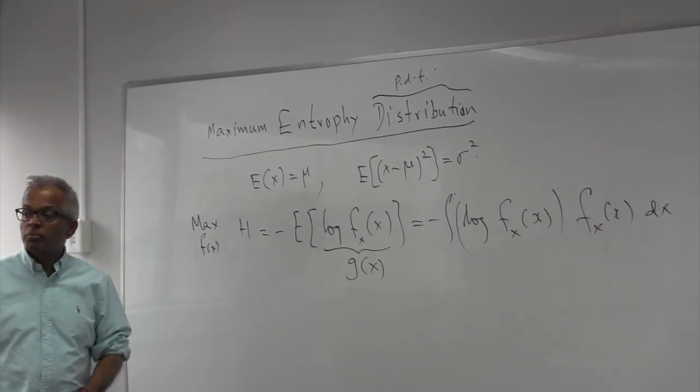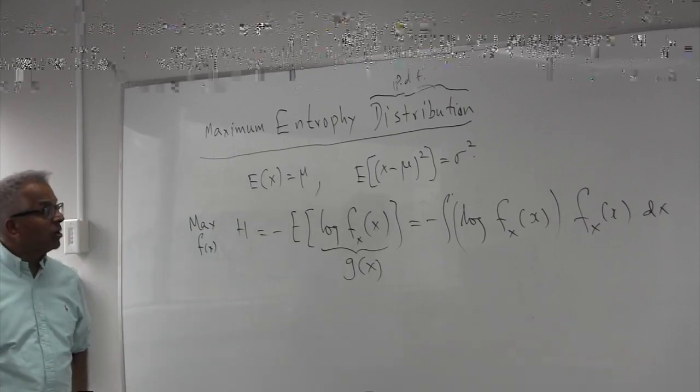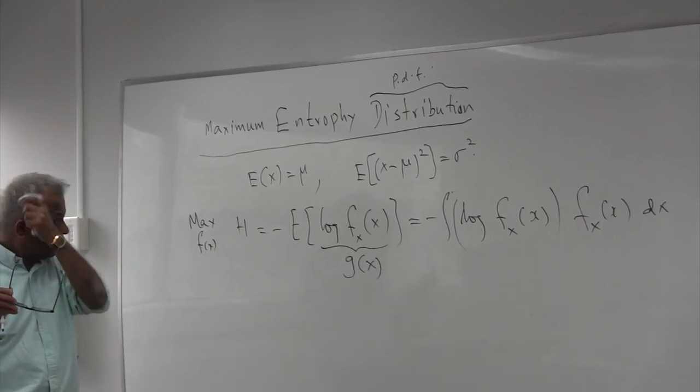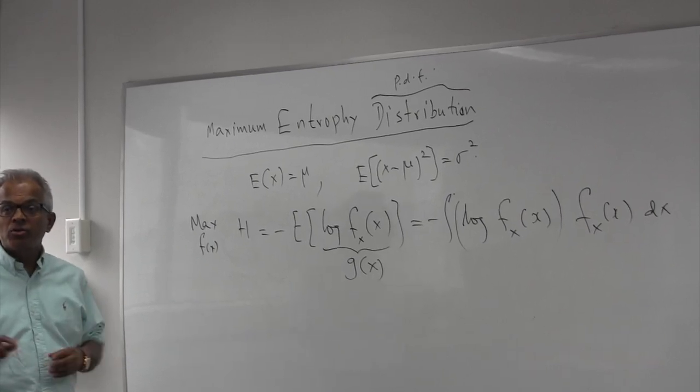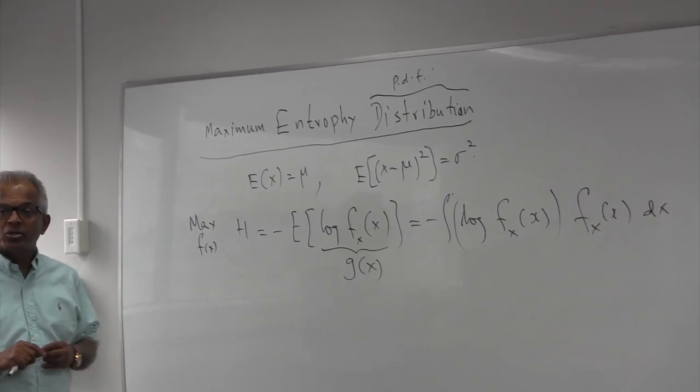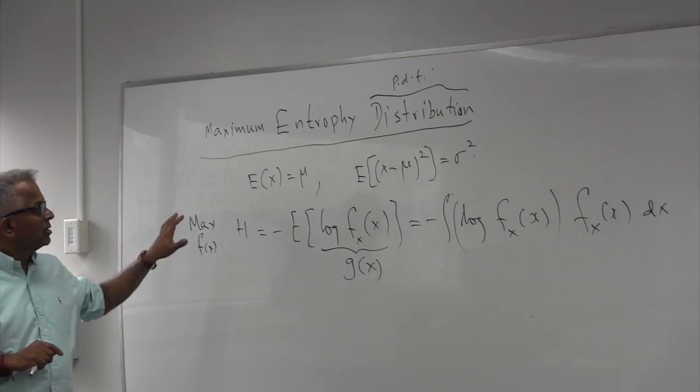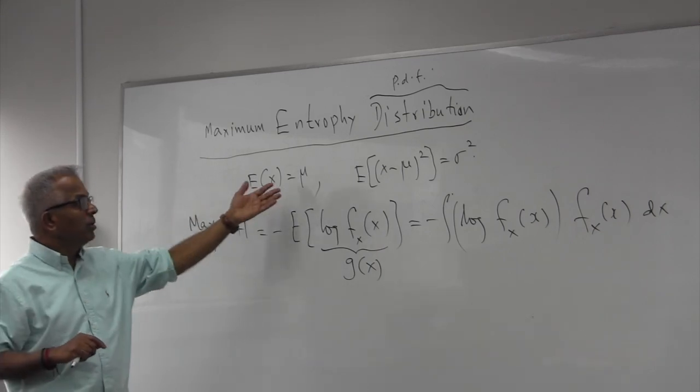The problem is what is the probability density function that maximizes the entropy? If you take entropy as a measure of disorder, then subject to the mean and variance.